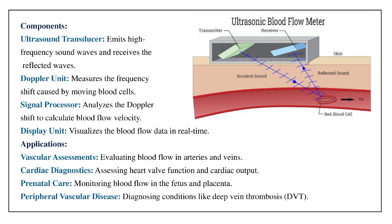Components: Ultrasound Transducer — emits high-frequency sound waves and receives the reflected waves. Doppler Unit — measures the frequency shift caused by moving blood cells. Signal Processor — analyzes the Doppler shift to calculate blood flow velocity. Display Unit — visualizes the blood flow data in real-time.